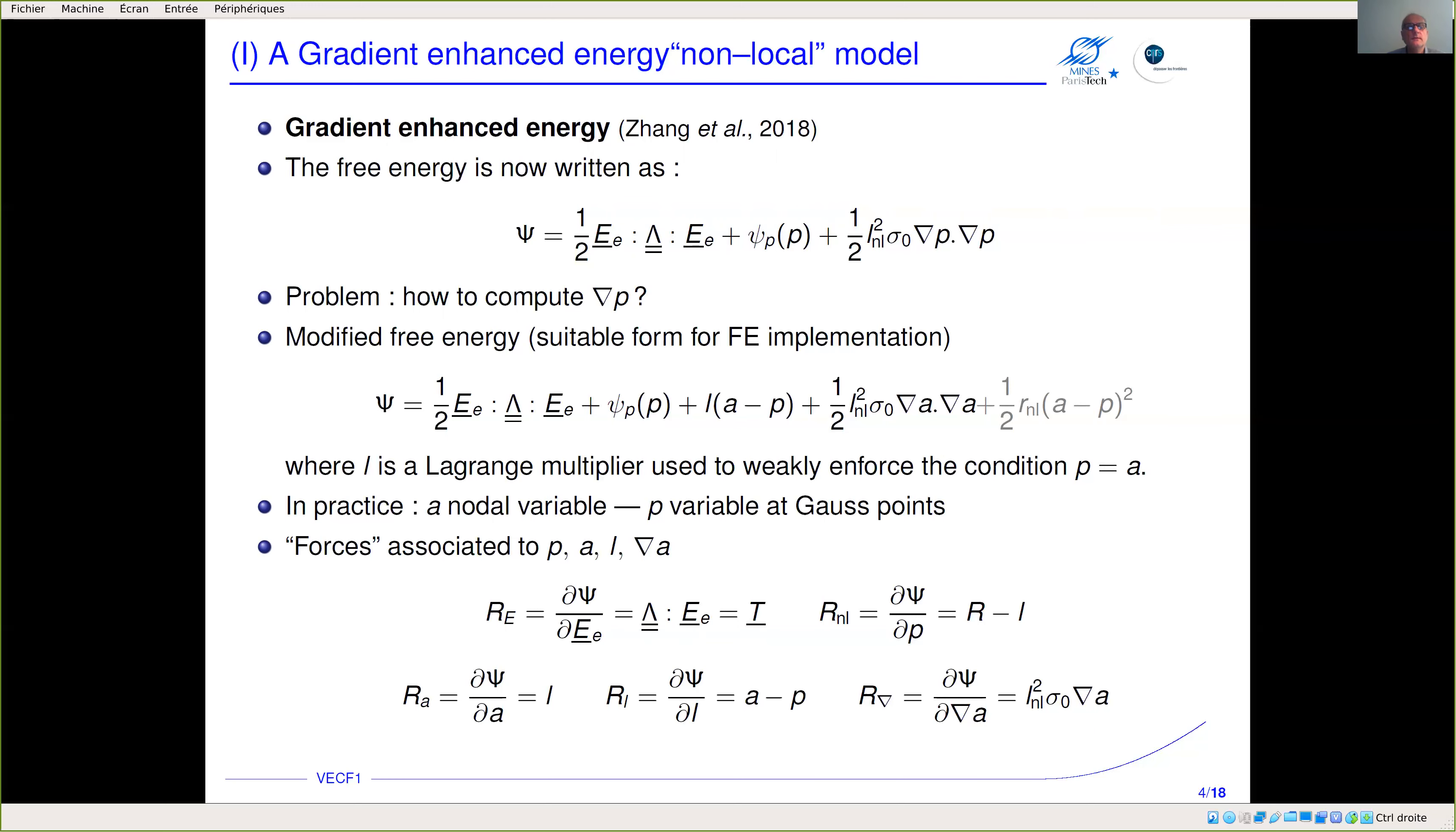To solve the problem we are introducing another variable which we call a, which is defined at nodes and is an unknown of the problem just as the displacement. a is the plastic strain at the node, so it needs to be as close as possible to the plastic strain at Gauss point. To do that we introduce a Lagrange multiplier.